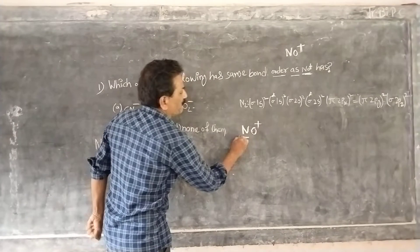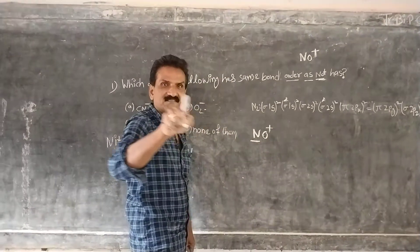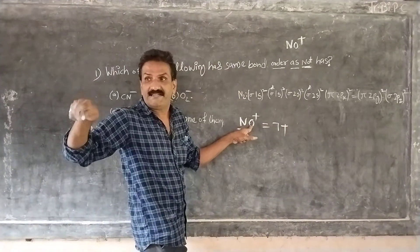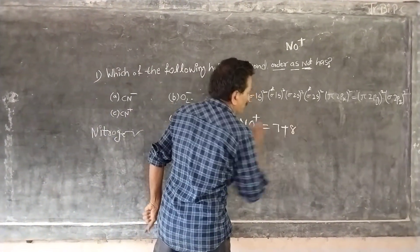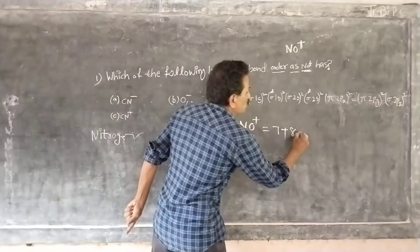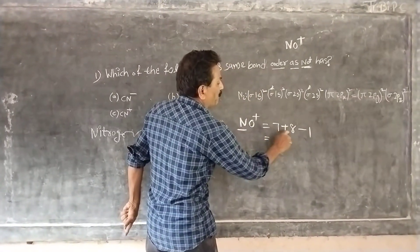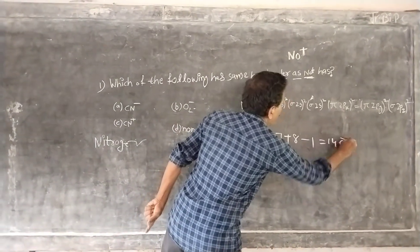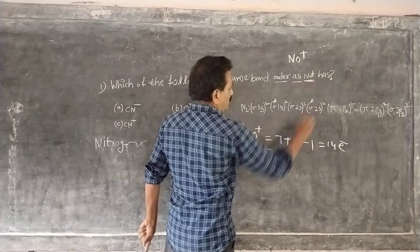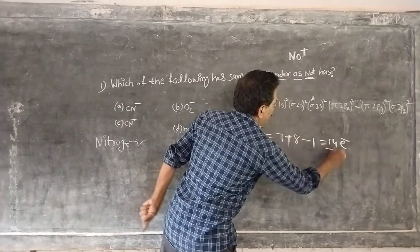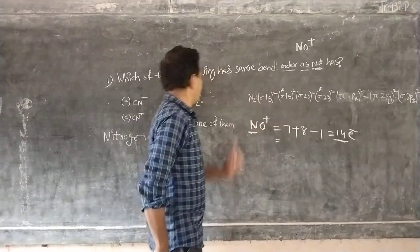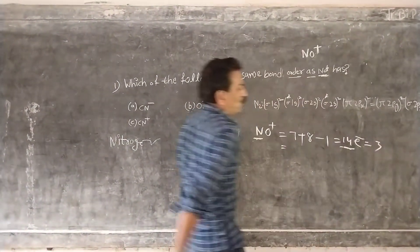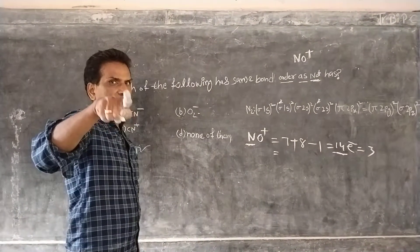For NO⁺: nitrogen has atomic number 7, so 7 electrons. Oxygen has atomic number 8, so 8 electrons. The plus sign indicates we remove 1 electron. So 7 plus 8 equals 15, minus 1 equals 14 electrons. NO⁺ has 14 electrons, and with 14 electrons, the bond order is 3.